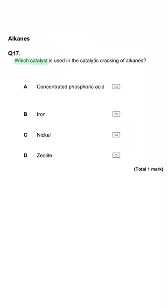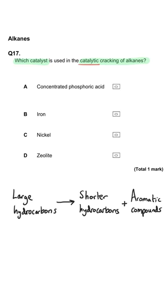Which catalyst is used in the catalytic cracking of alkanes? This is quite a nice straightforward multiple choice question. The correct answer is D, the zeolite catalyst is used in catalytic cracking.